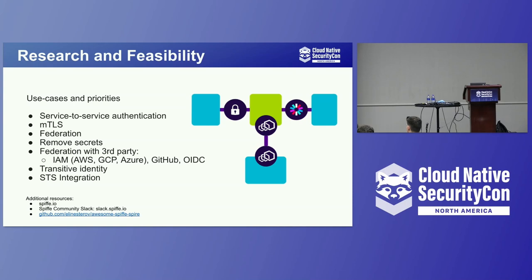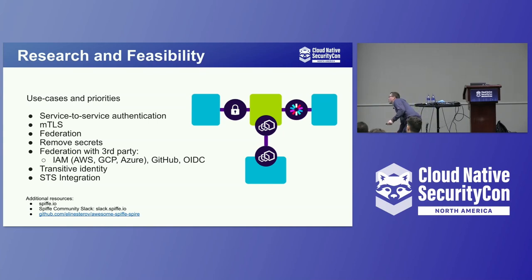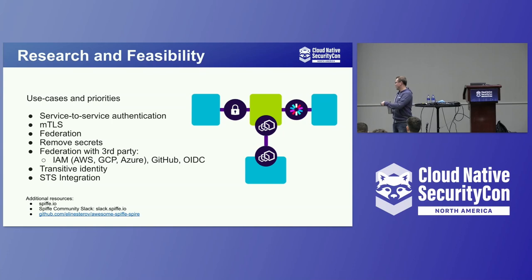The goal there is to figure out a set of use cases and priorities for your SPIRE rollout. Is mTLS important? Or do you want to use SPIFFE identity for federation to get credentials or secrets stored in Vault? Or use it for federation between different SPIFFE identity-aware systems? Or completely replace your static secrets — like API keys — or do an AWS/GCP identity exchange using SPIFFE identity? There's lots of information about use cases on the website, and you can ask questions in the SPIFFE Slack.